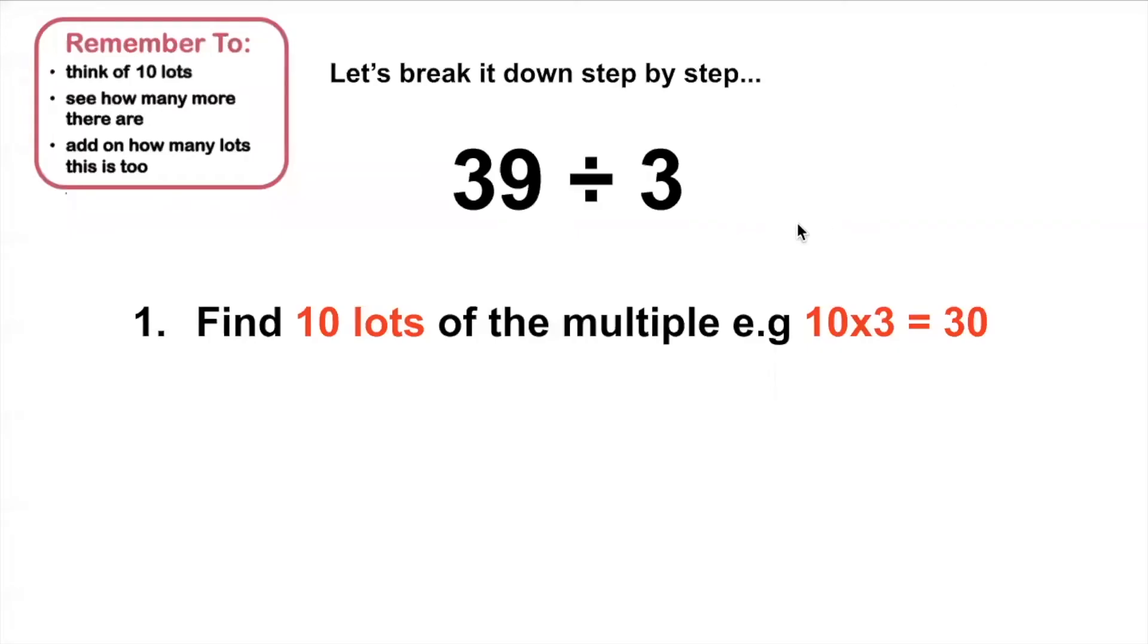Let's break it down step by step, this time dividing by 3. First you need to find 10 lots of the multiple that you're dividing by. So this time we're dividing by 3, so we need to find 10 lots of 3. So I would do 10 times 3, which is 30.